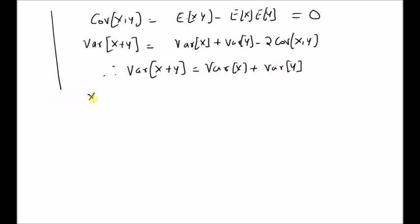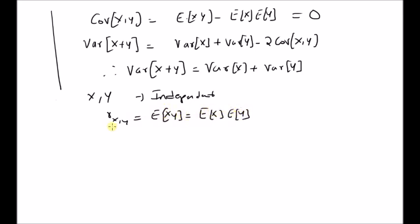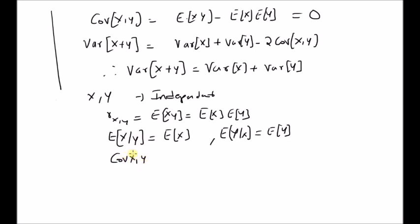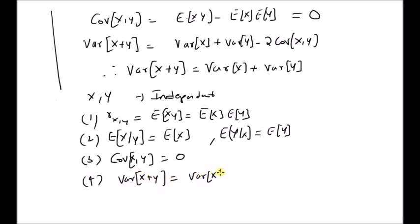To summarize, for two independent random variables x and y: the correlation R(x,y), that is E[xy], equals E[x] times E[y]; the conditional expectation E[x|y] equals E[x], and E[y|x] equals E[y] — the conditional expectation does not depend on the other variable since they are independent; the covariance of x and y is zero; and the variance of x plus y equals the sum of the individual variances. These are the important properties of independent random variables. Thanks for watching.